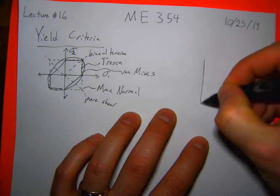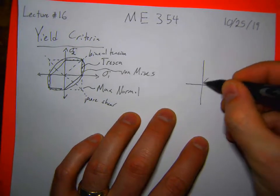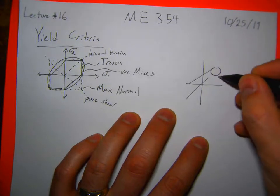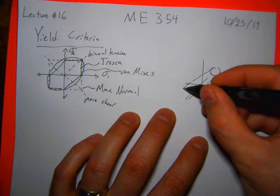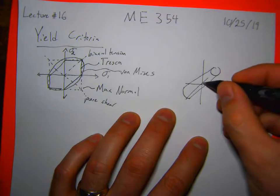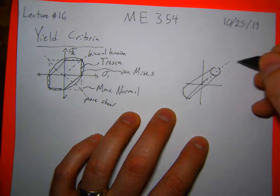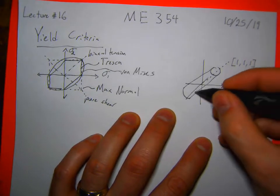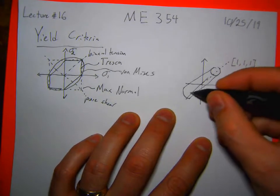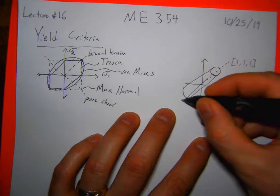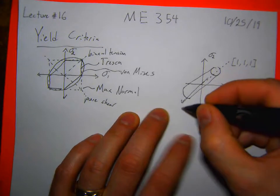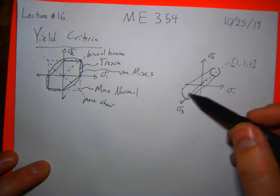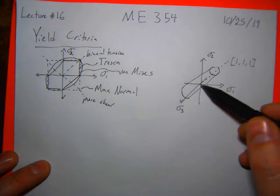The von Mises surface in 3D looks like a cylinder in space, oriented so the center of the cylinder is along the (1,1,1) direction in sigma one, sigma two, sigma three space. If I applied a hydrostatic pressure, I would be going along the axis of this cylinder. These criteria are useful generally for isotropic materials.